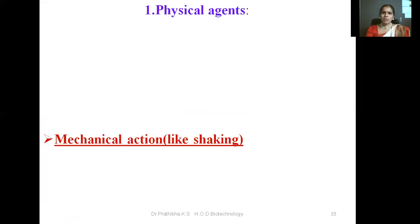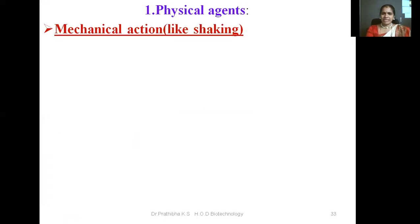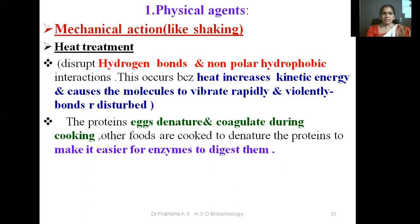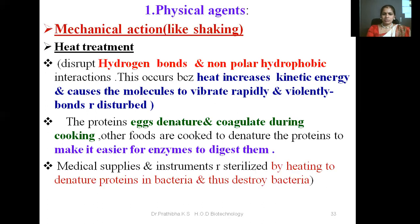Now let us go through the physical agents. Physical agents include mechanical action such as shaking. Heat treatment disrupts hydrogen bonds and non-polar hydrophobic interactions. This occurs because heat increases kinetic energy and causes molecules to vibrate rapidly and violently, disturbing the bonds. Proteins in eggs denature and coagulate during cooking. Other foods are cooked to denature proteins, making it easier for enzymes to digest and break them down.